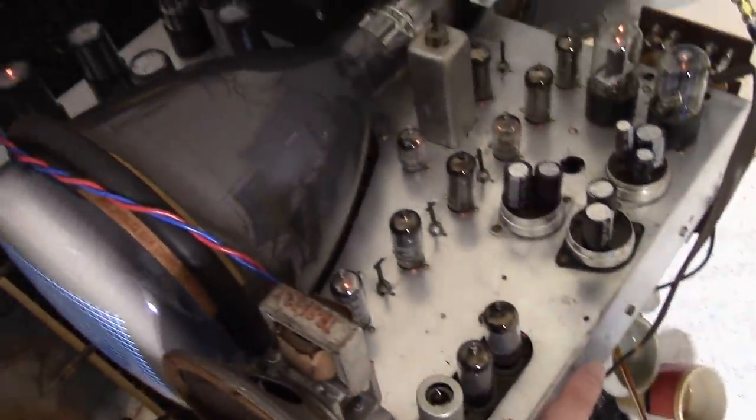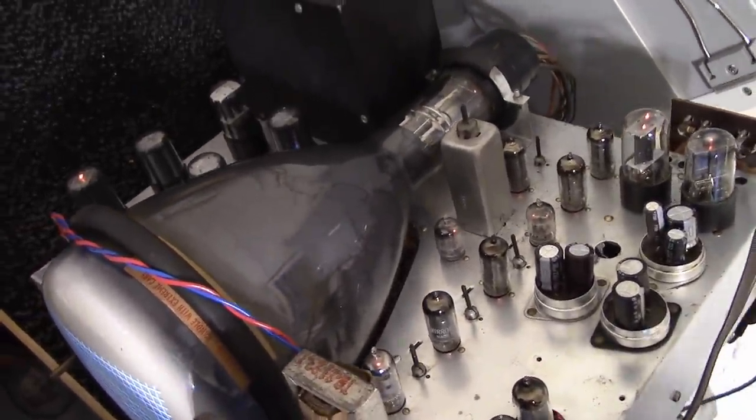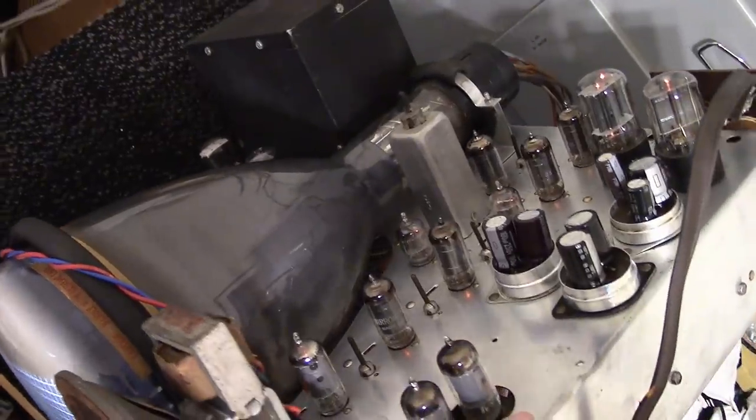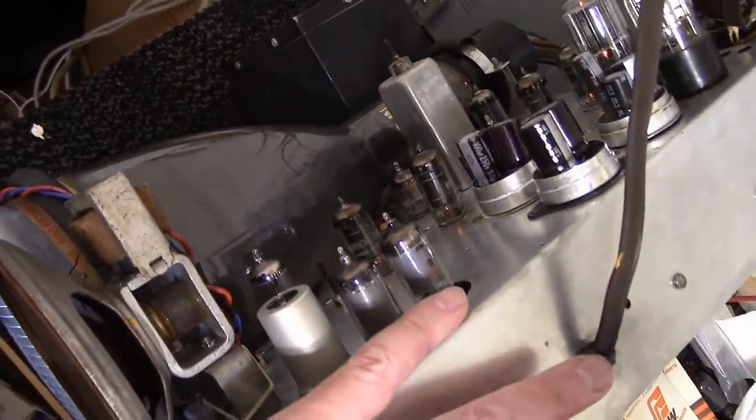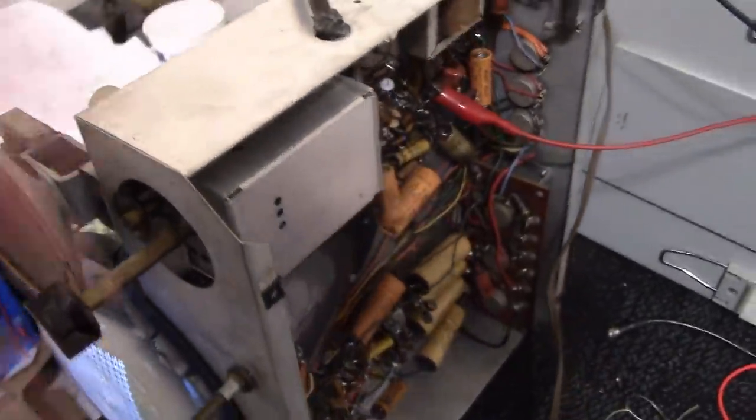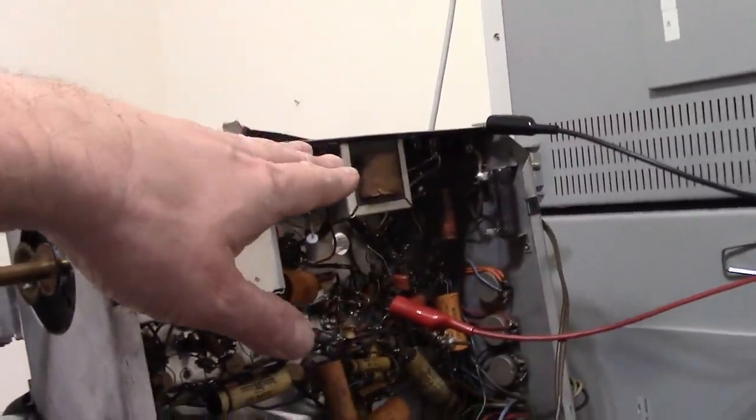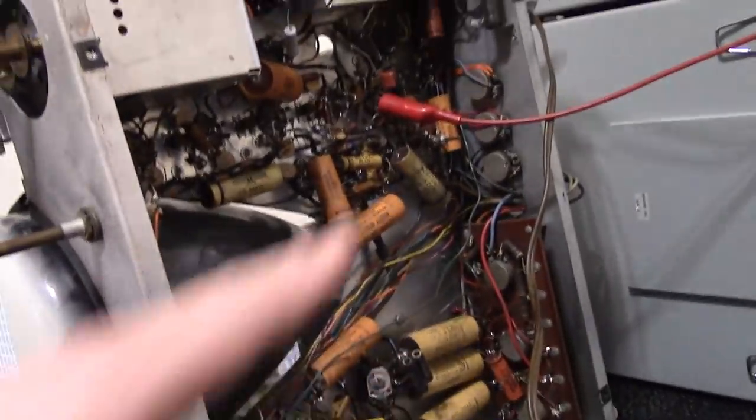I finished cleaning up the chassis with CLR and reinstalled all the tubes. They're mostly all the original tubes it came with, all the Miratone and Meck branded tubes. Just had to replace two of the 6BU6s and one of the 12SN7s because they tested poorly. Filter choke is back in the set and all the extra filter caps have been removed.